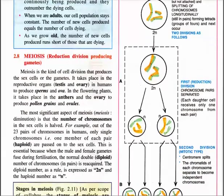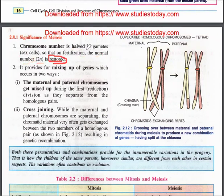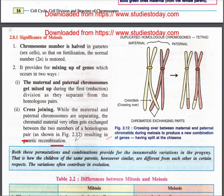The significance of meiosis: the chromosome number is halved in gamete sex cells, and at fertilization the normal diploid number is restored. It also provides for the mixing of genes — maternal and paternal chromosomes get mixed during the first reduction division as they separate from homologous pairs. Crossing over also allows exchange of chromatin material, resulting in genetic recombination.